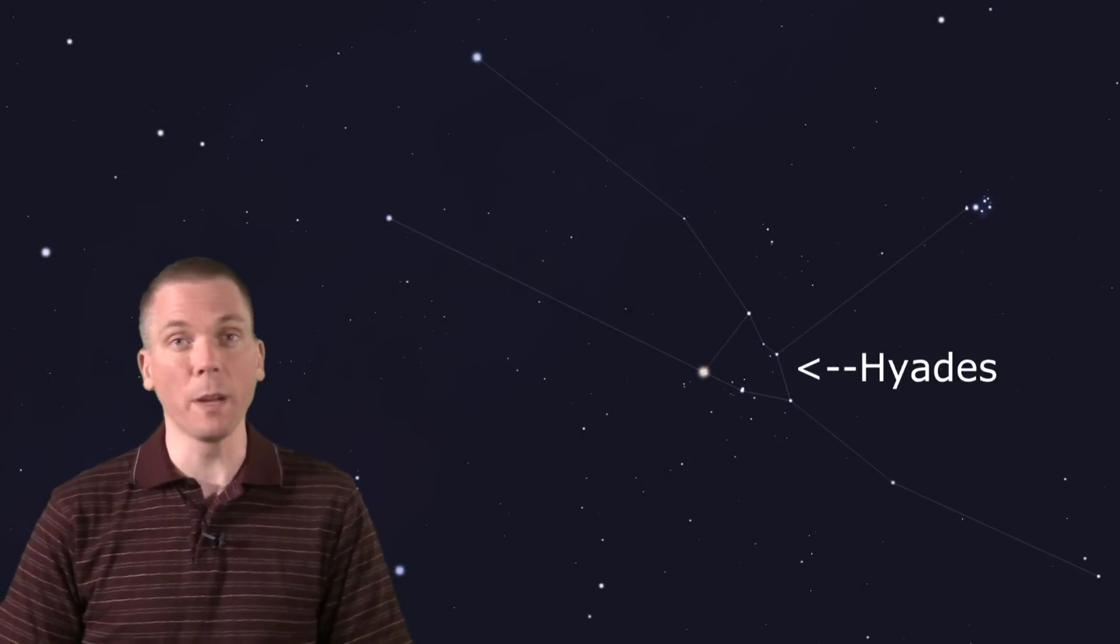There are some open clusters and asterisms well worth viewing in Taurus. One open cluster is the Hyades, a large V-shaped grouping of stars a mere 140 light years from us, punctuated by the 2.3 times closer, not to mention brighter star, Aldebaran. The large angular size of the Hyades usually requires binoculars to view it well. Check out the past video for more information.